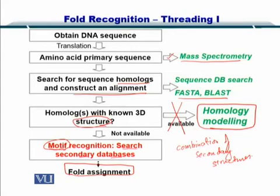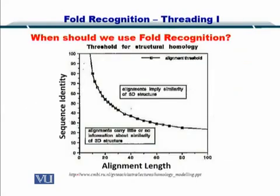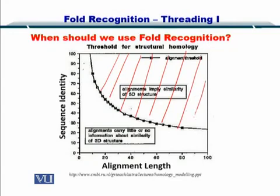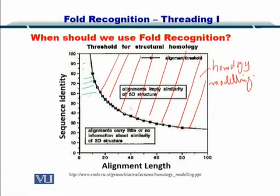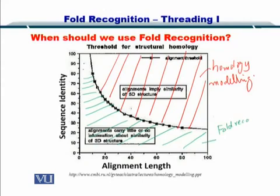We will define fold and discuss it in this module in a little while. So why should we use fold recognition or threading? If you remember this graph, we had two portions. One was above this line — that is the portion where homology modeling is very helpful in predicting the structure. But if your sequence identity and alignment fall in the lower range, then you go for fold recognition or threading. Earlier we were talking about the red region for homology modeling, and now we are going to talk about this portion.